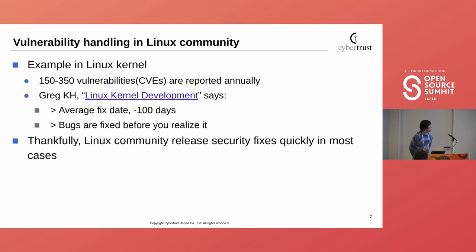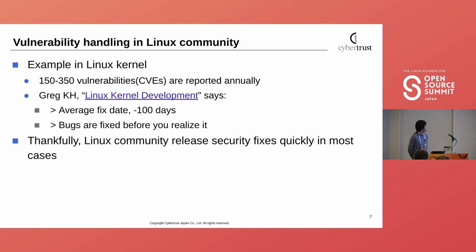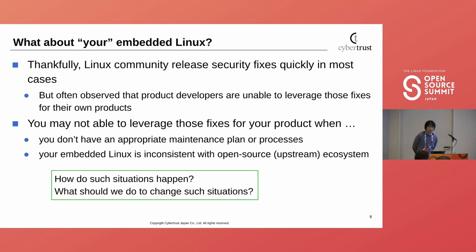On the other hand, how is vulnerability handling in the Linux community? For example, in the Linux kernel, 150 to 350 vulnerabilities are reported annually. Greg's presentation says the average fix date is minus 100 days and bugs are fixed before you realize it. So this means the Linux community releases security fixes quickly in most cases. But what about your embedded Linux? It is often observed that product developers are unable to leverage those fixes for their own products.